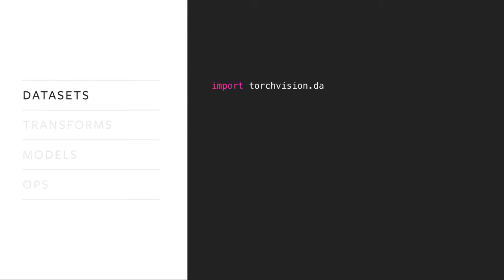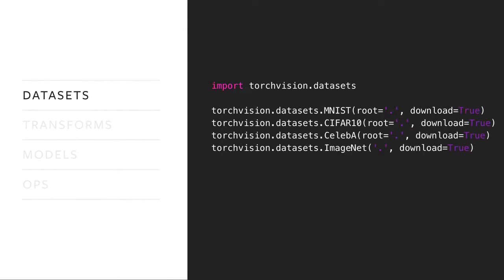For datasets, it's pretty much a one-liner for the standard datasets — we can download them from the internet and put them somewhere, and that's it. We have a number of assets available for not only image classification but also detection, segmentation, and now video, and that makes your life much easier when you just want to experiment on a standard task.